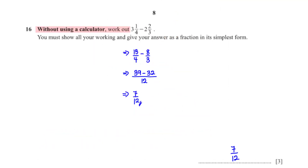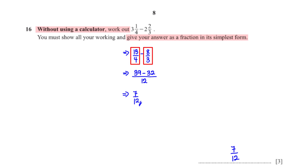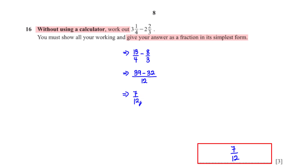Without using a calculator, work out 3¼ − 2⅔, giving your answer as a fraction in its simplest form. Convert to improper fractions: 3¼ = 13/4 and 2⅔ = 8/3. The LCM of 4 and 3 is 12, so 13/4 = 39/12 and 8/3 = 32/12. Then 39 − 32 = 7, giving 7/12.